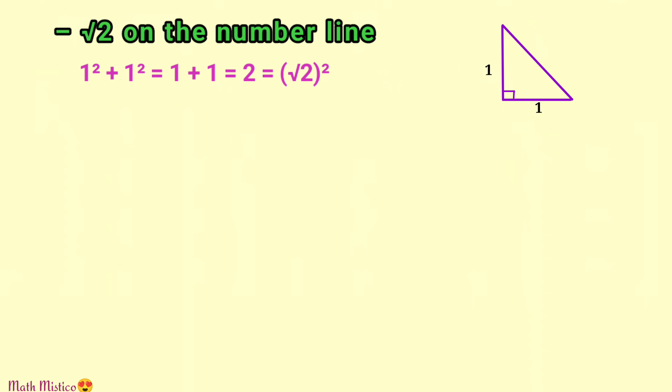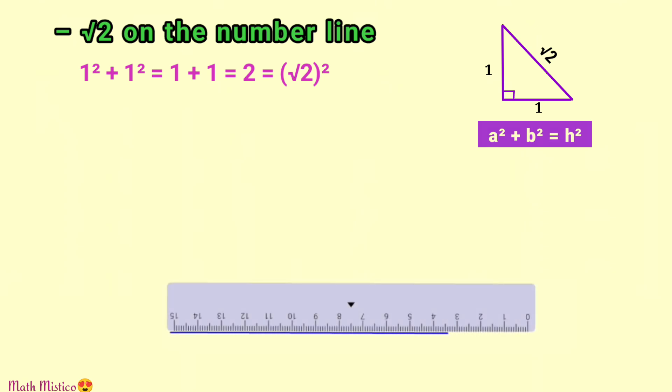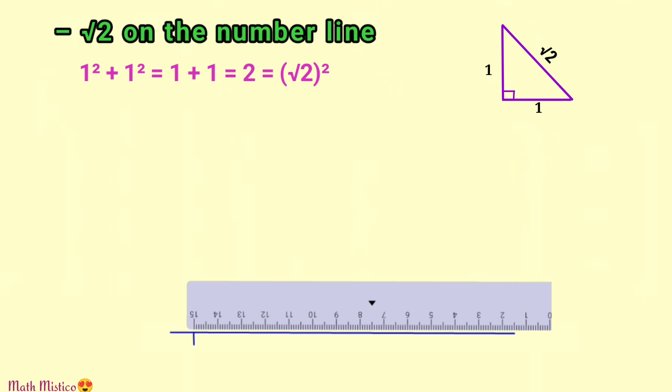We'll start by constructing a number line. Make sure that you mark points at equal distances on the number line. I'm marking points at 2 centimeter distance; you may take one inch also. Put arrows on either sides because it's a line.